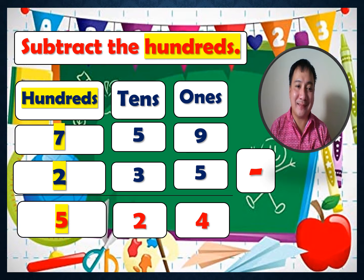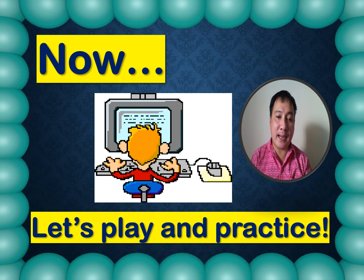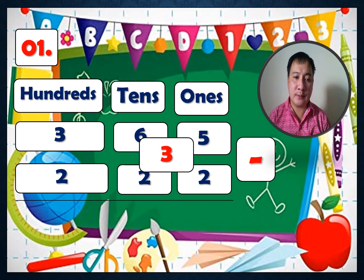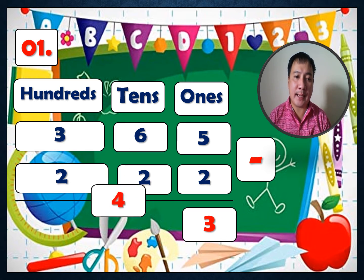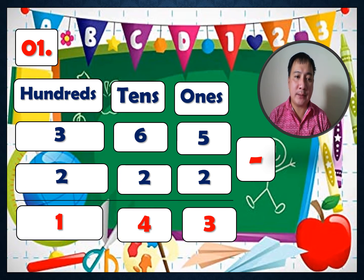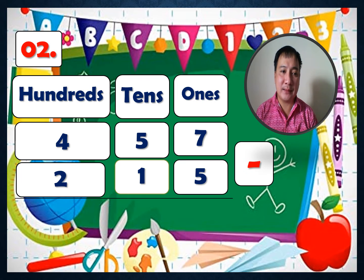Now let's play and practice. Practice number one: 365 minus 222. Ones: 5 minus 2 equals 3. Tens: 6 minus 2 equals 4. Hundreds: 3 minus 2 equals 1. The answer is 143.